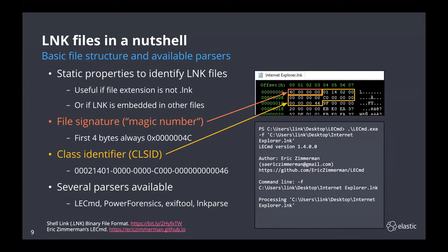Microsoft's specification for this file type is about 50 pages — I'll save you some time and just call out the highlights. Here are the values of the file signature or magic number and the class identifier that enable us and the Windows OS to identify link files even if the file extension is not .lnk. You've got several open source link file parsers available. I like to use Eric Zimmerman's LECmd — it's fast, reliable, and there's an option to parse link files in bulk. I'll be using LECmd in the examples throughout this presentation.